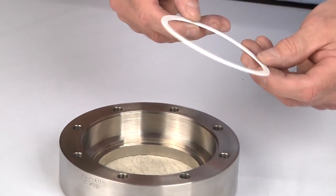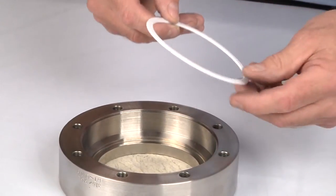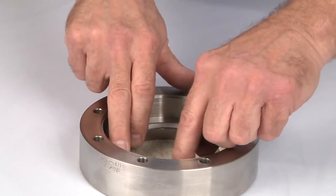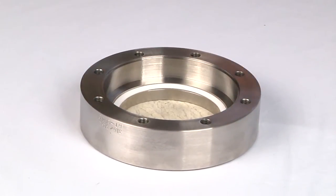First, place the bottom cushion gasket in the unit body. Remember, this gasket has the larger interior diameter.